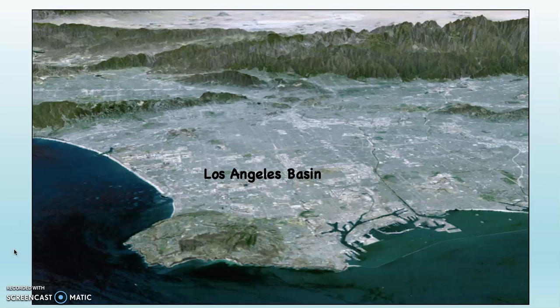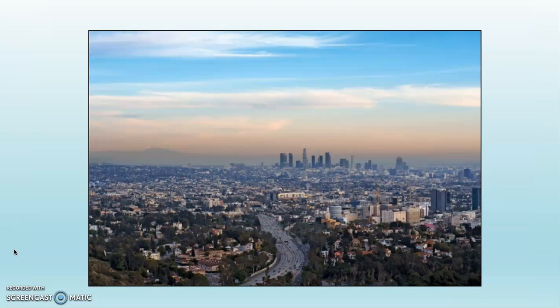Where is all of that farmland today? It's under the city — under houses, streets, highways, malls and strip malls, factories, businesses, schools, parks, football fields, and so on. As the city grew outwards, mostly from L.A. but also from all of the many urban nodes in Southern California — Long Beach, Santa Ana, Pasadena, Torrance, Corona, and so on — the farmland was slowly converted to an urban and suburban landscape.